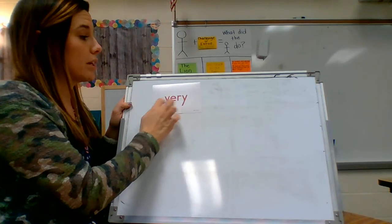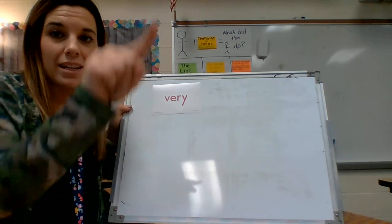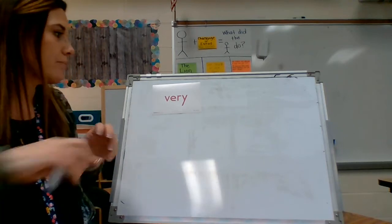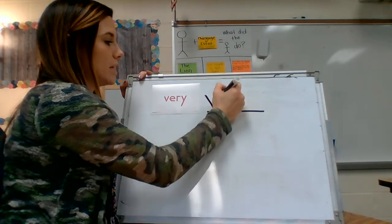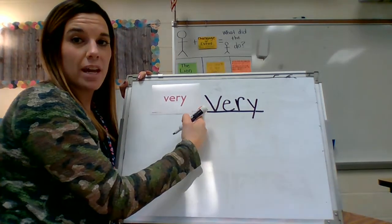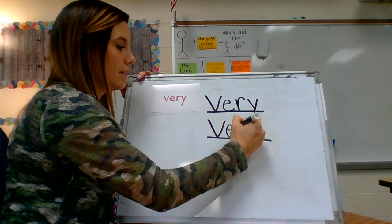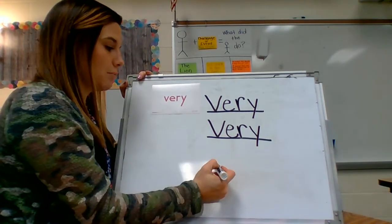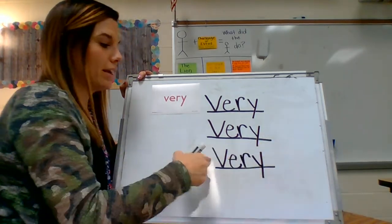So, I'm going to practice writing my word very three times at home. I want you to practice writing it in the air, okay, as I write it on the board. So get your air finger ready. Very. And I'm going to make the line for it. Very. Very. Let's spell it. V-E-R-Y. Very. Let's do it again. Very. V-E-R-Y. Very. I hope that you're air writing the word at home. Very. V-E-R-Y. Very.